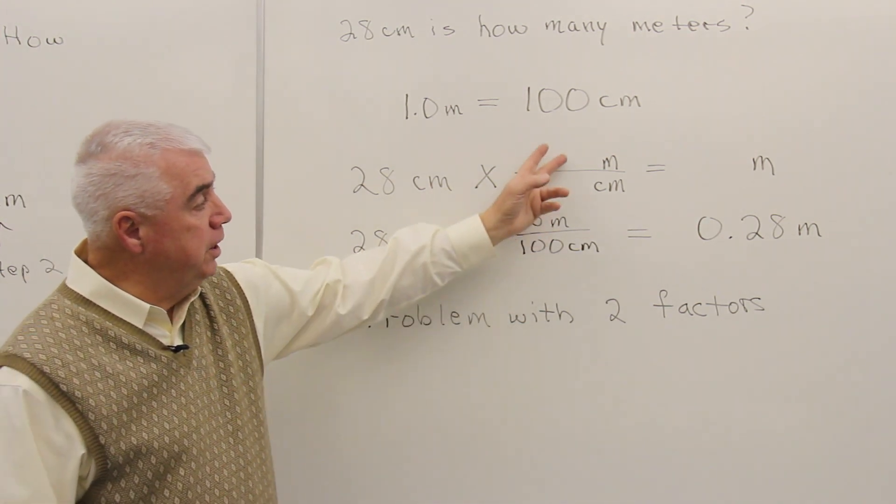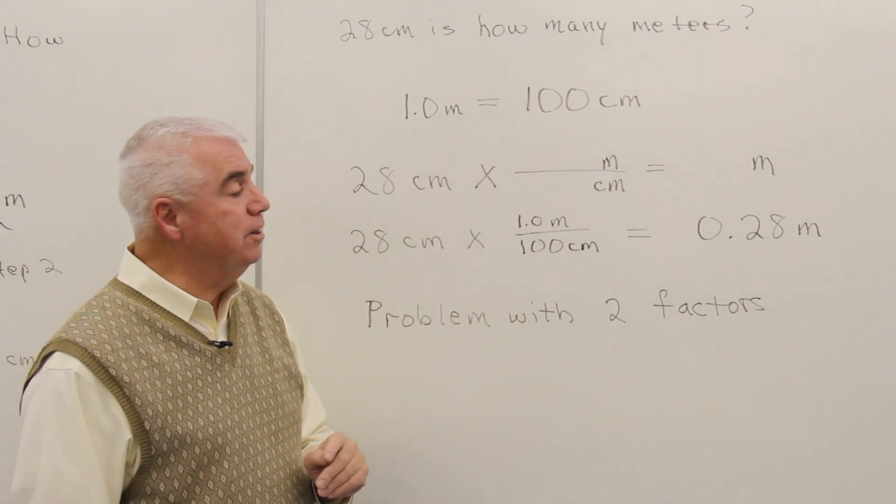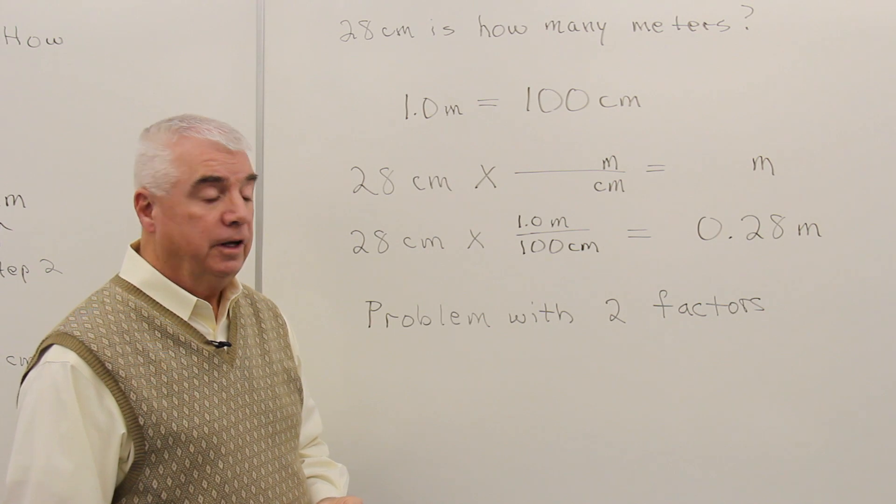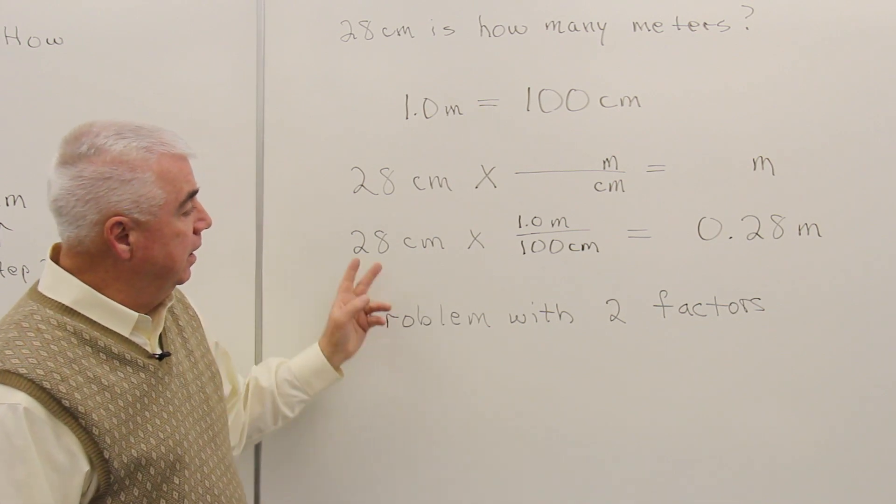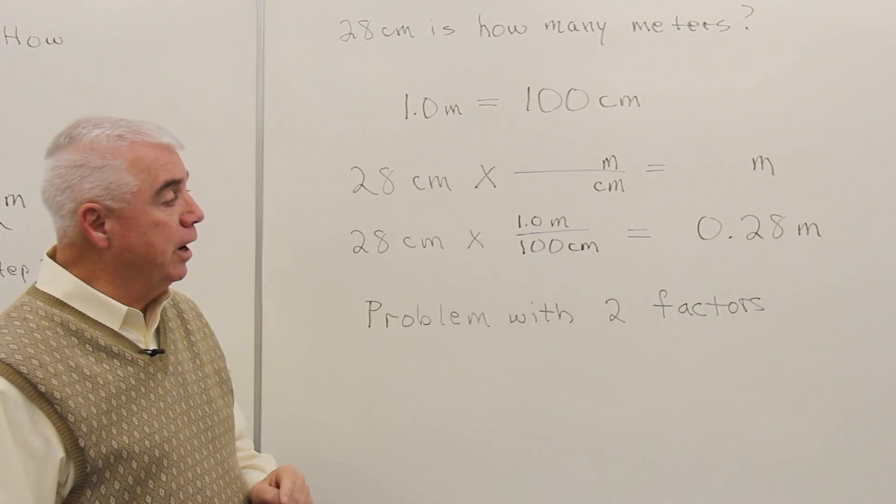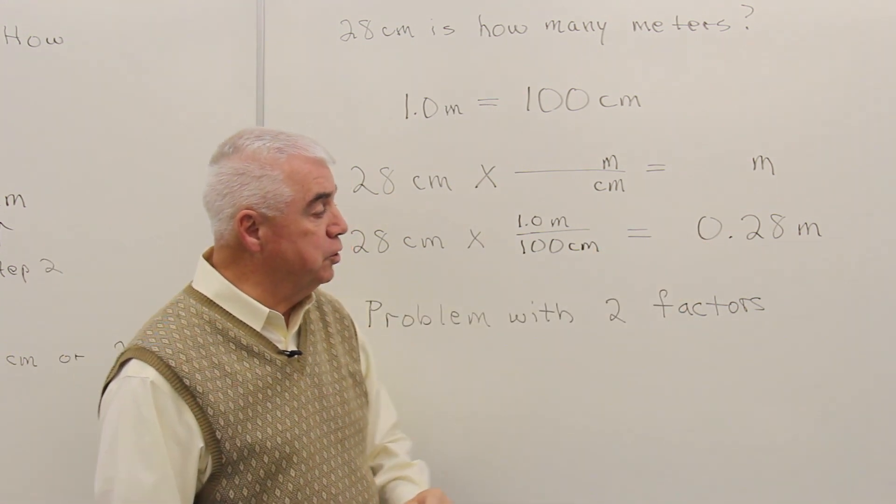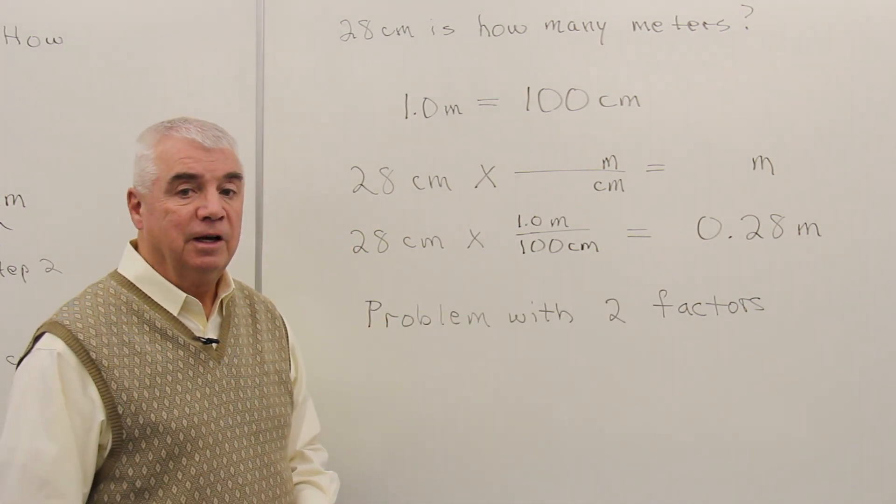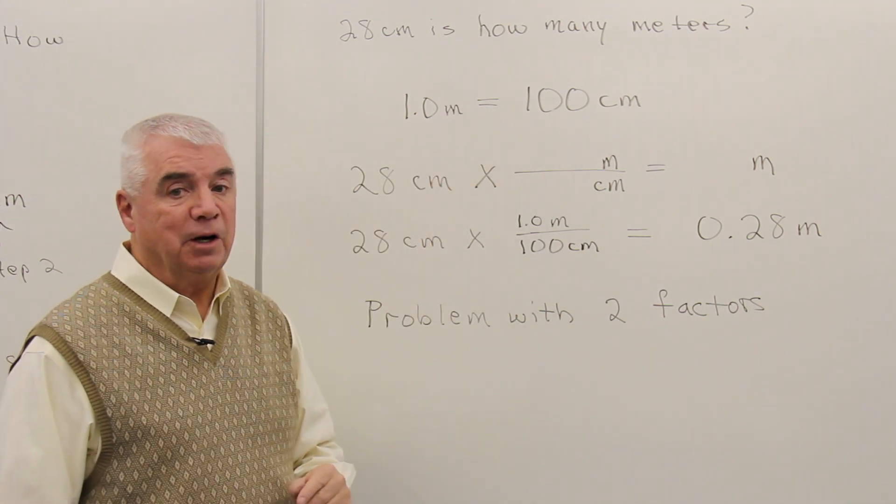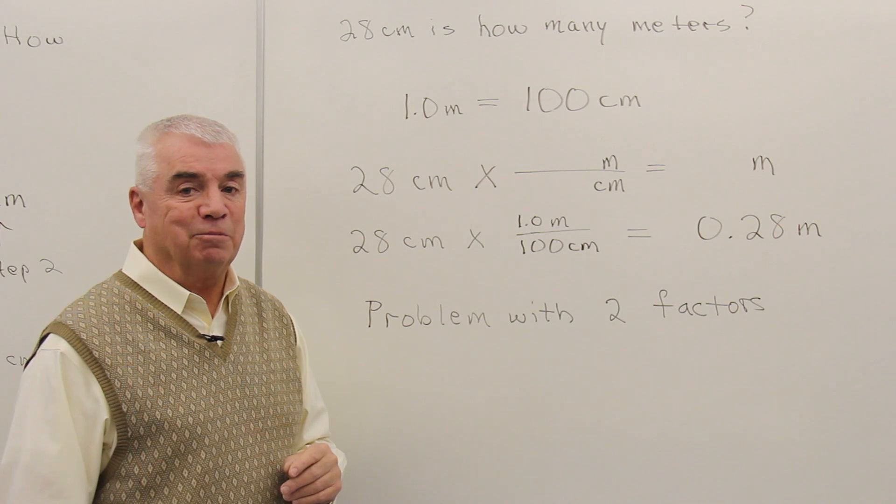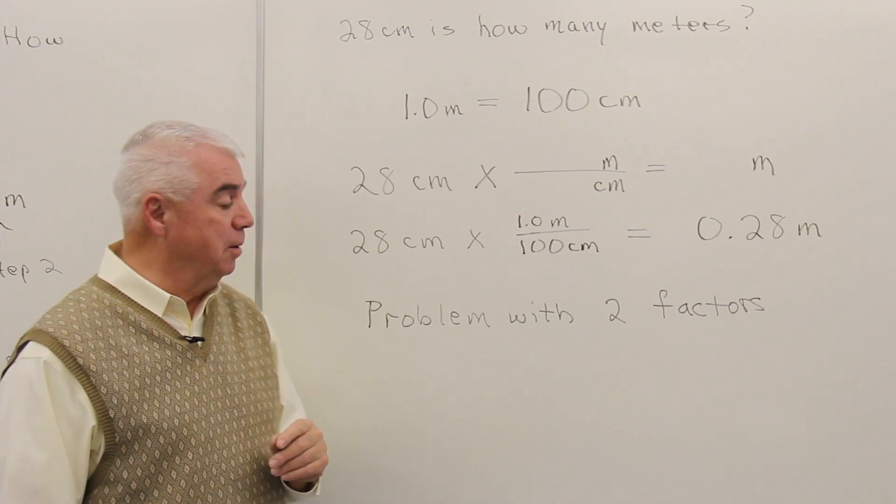And now we'll put in the numbers that are associated with those units from our equation. And multiply the numerators, divide by the denominators, we get 0.28 meters. Really pretty easy, but later on in the text you'll find that you can work even hard problems that quickly and that simply.